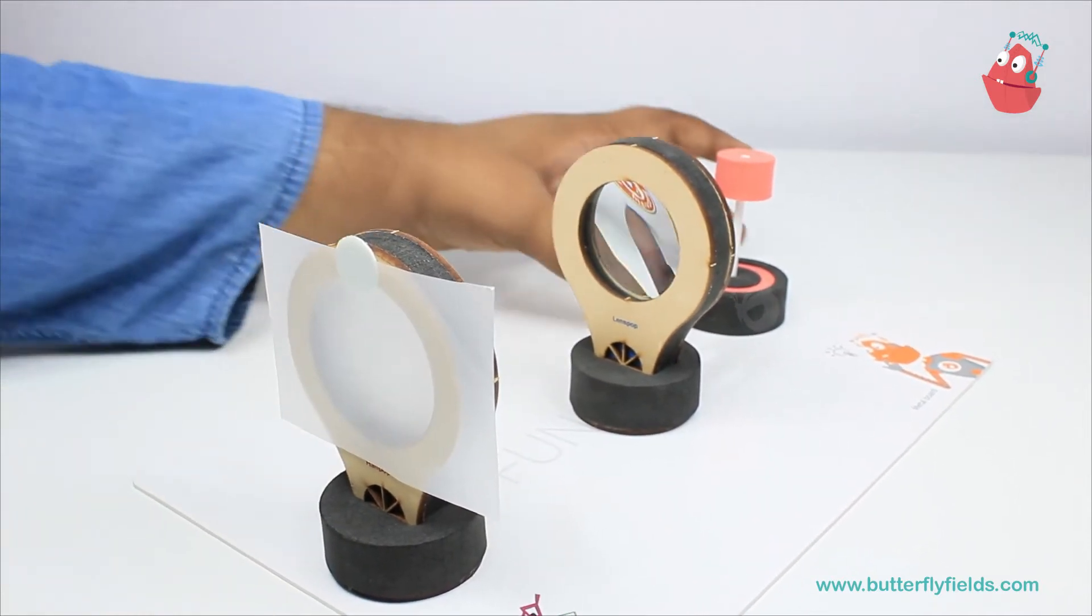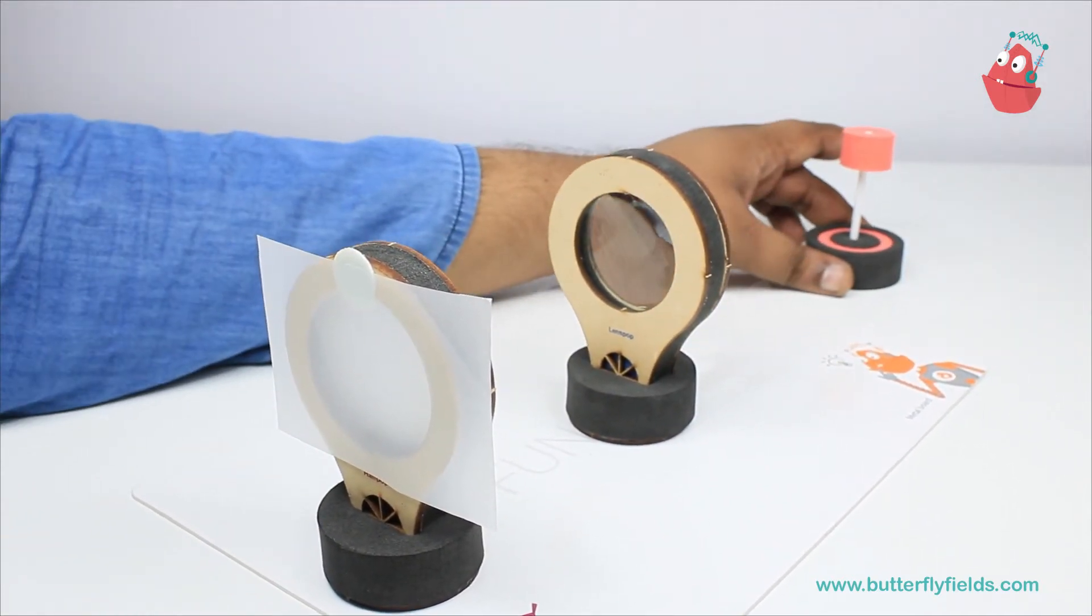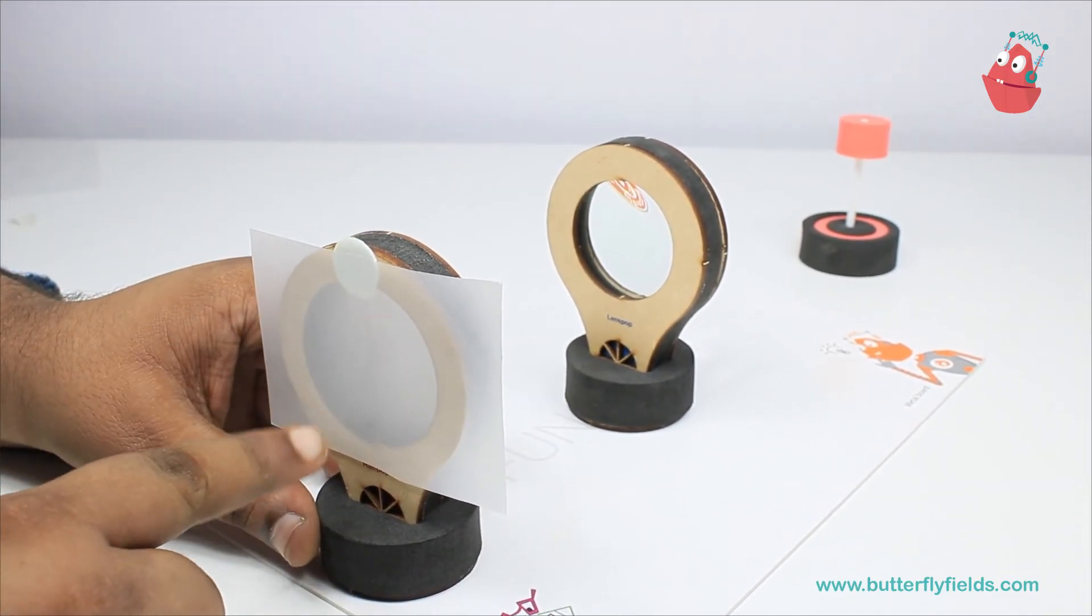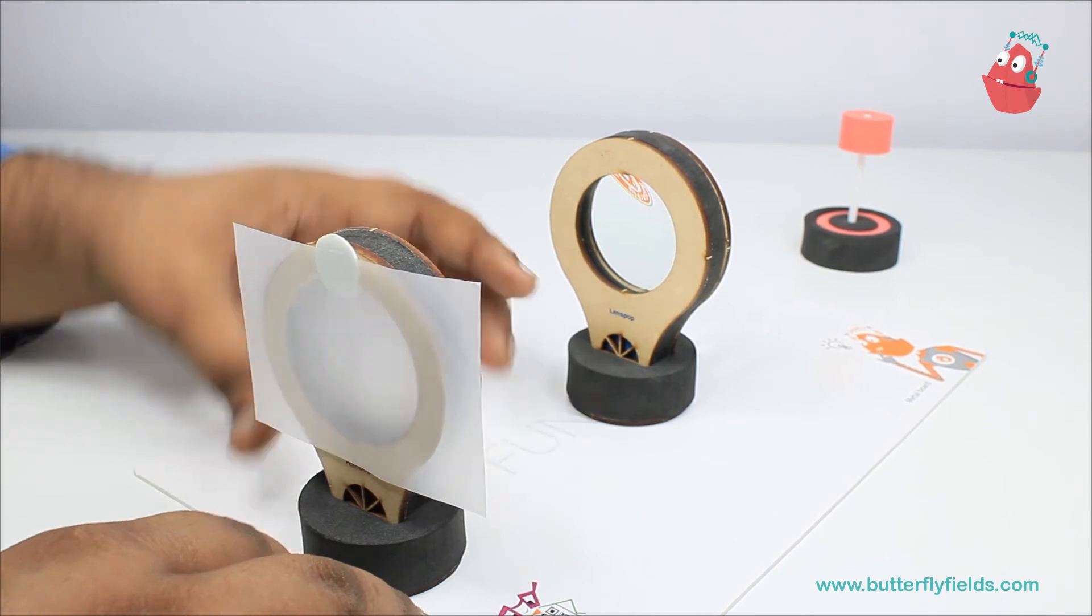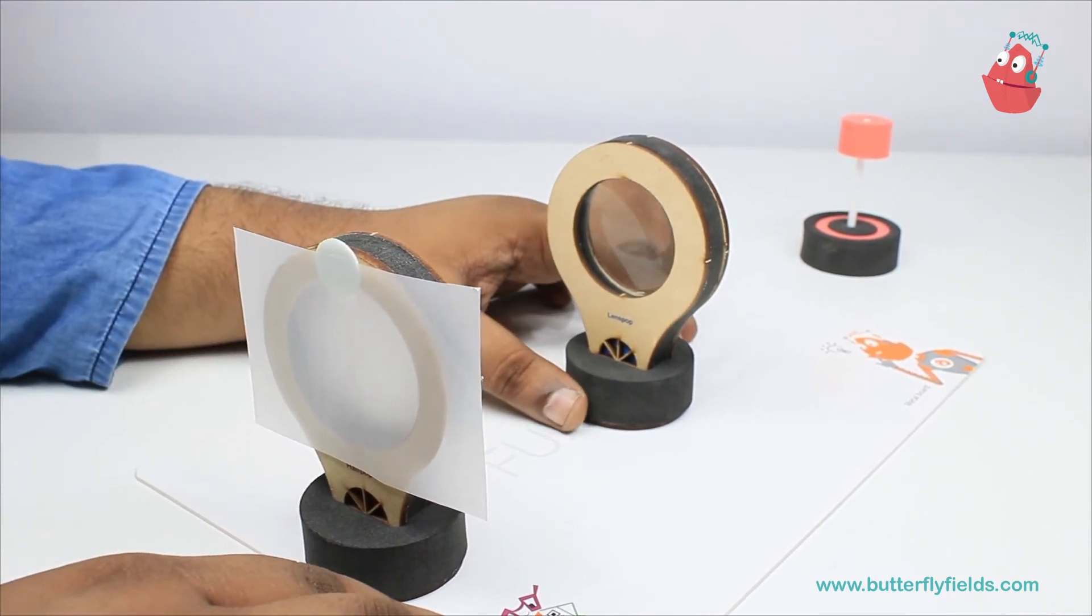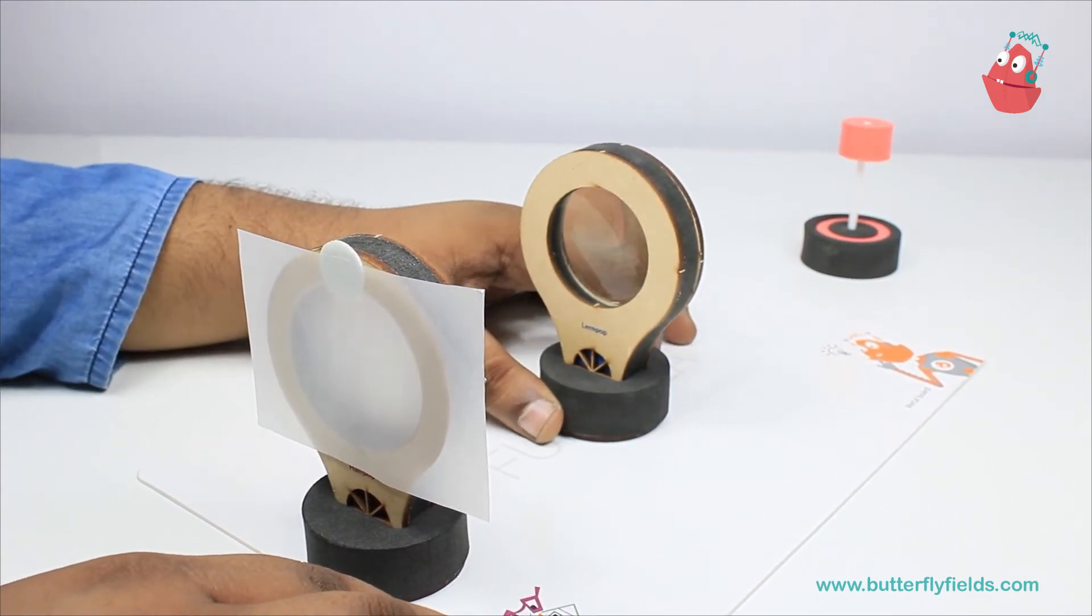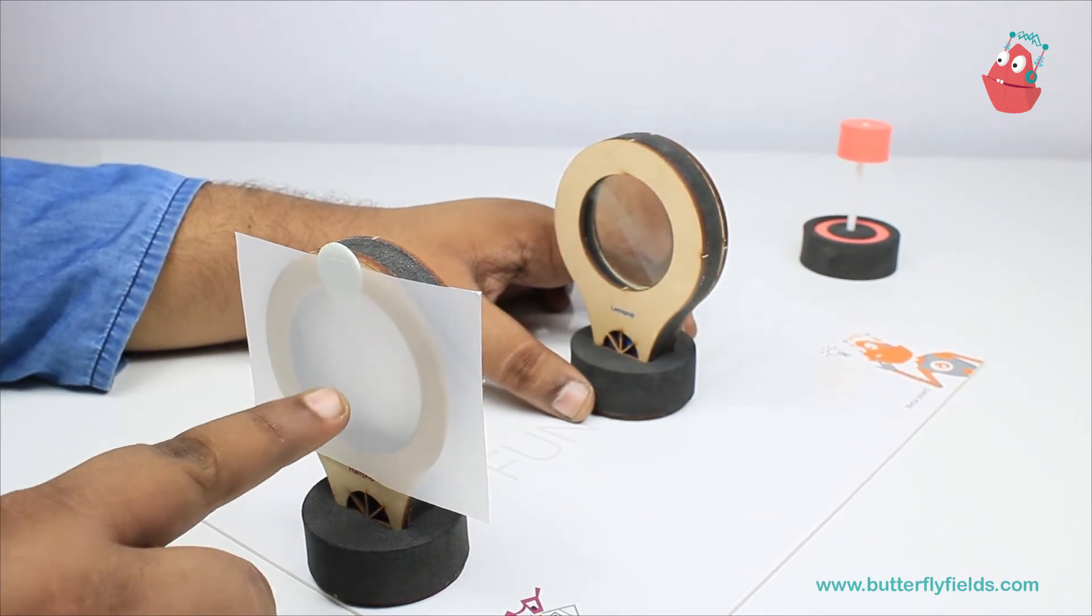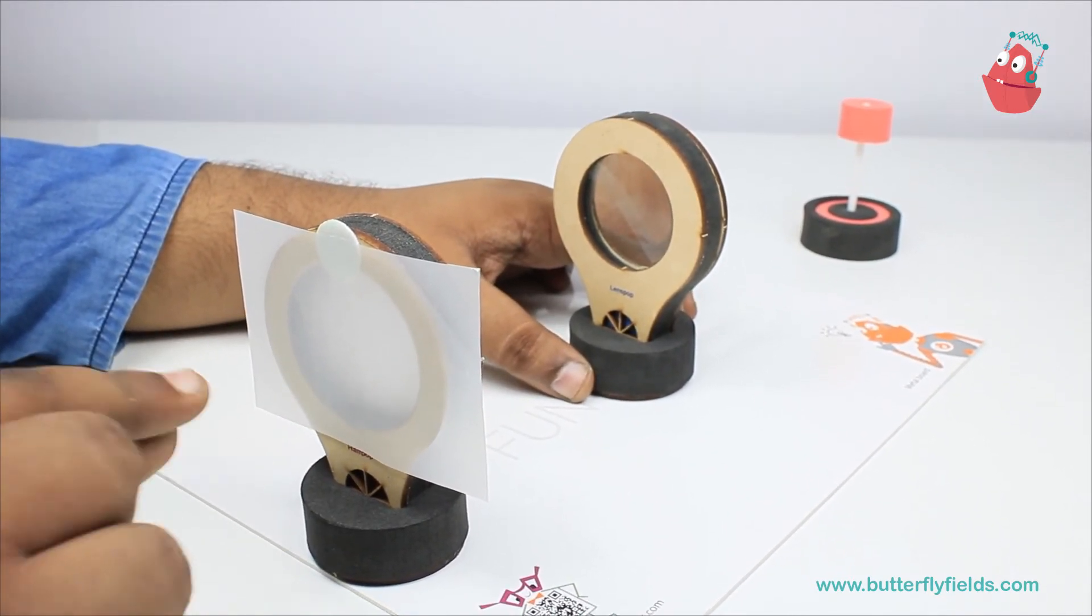Now keep the object a little bit far, and you have to view through the screen. You have to adjust the lens in between. You can move it front and back and observe when sharp image is formed.